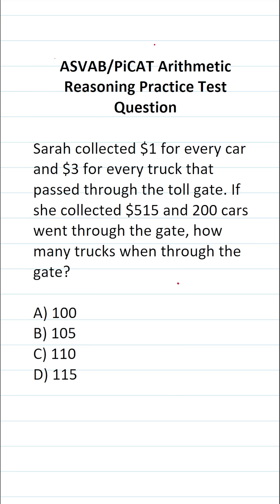So in order to solve this one, we have to translate these statements into an equation that we can then solve. Let's start with this part right here. She collected $1 for every car that passed through the gate. That's going to be one times the number of cars that went through the gate. I'm going to use the letter variable C to represent the number of cars that went through the gate.